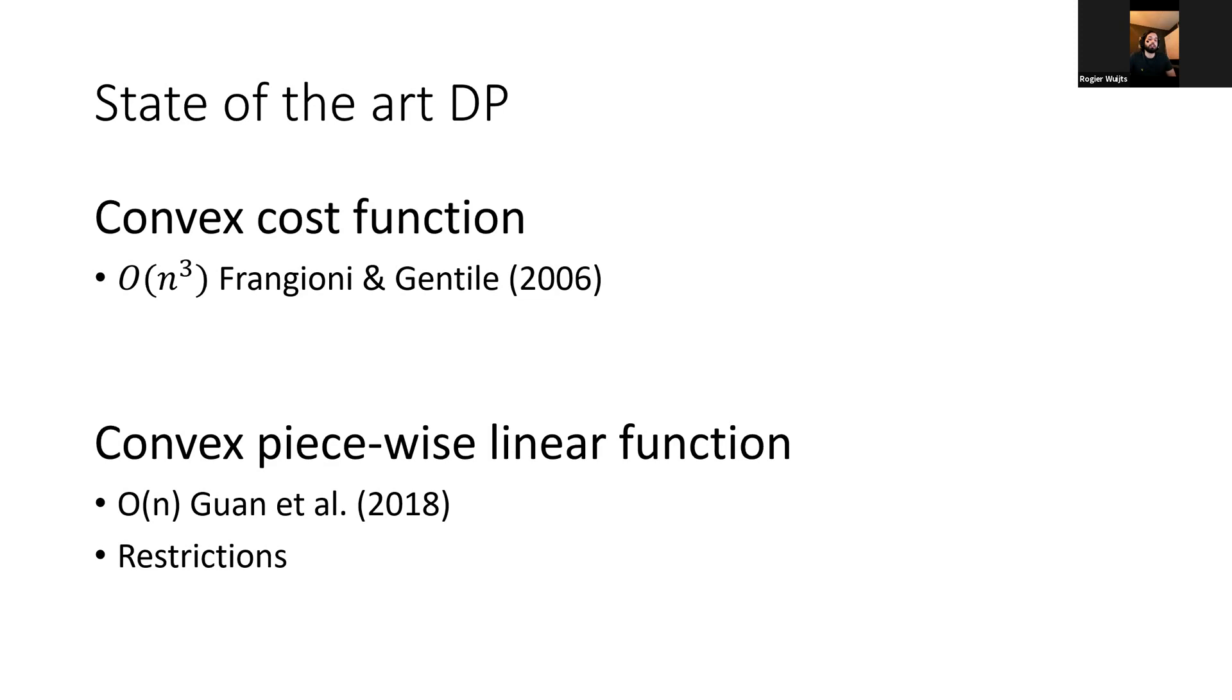But if your generation cost function is still convex but piecewise linear, we can do much better. We can solve this problem in linear time, done by Guan et al in 2018. It's linear but there's some hidden constants which can be rather large, but at least it scales linear with the amount of time steps. Moreover, this algorithm has some restrictions - the ramping limits need to be the same, so the ramp up limit and ramp down limits cannot differ. There was a small mistake in this algorithm actually, but it's easily fixable.